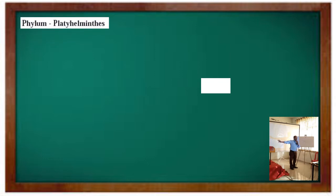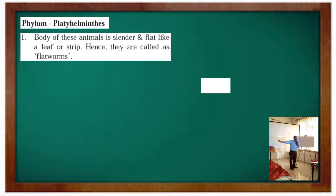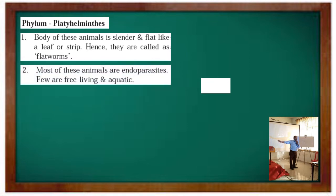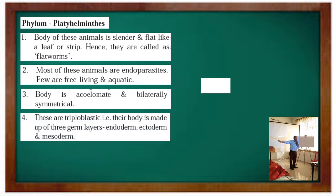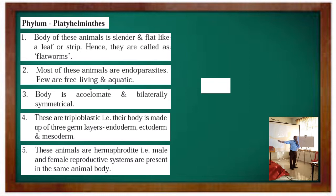The next phylum is Platyhelminthes. The body of these animals is slender and flat like a leaf or strip, hence they are called flatworms. Most of these animals are endoparasites; few are free-living and aquatic. The body is acoelomate and bilaterally symmetrical. These are triploblastic — their body is made up of three germ layers: endoderm, ectoderm, and mesoderm. These animals are hermaphrodites, meaning male and female reproductive systems are present in the same animal body.